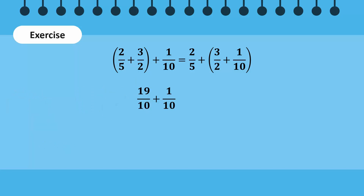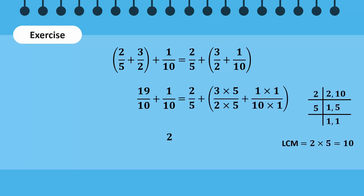19 over 10 plus 1 over 10 is equal to 20 over 10, which can be simplified to 2. Now we will solve the right-hand side by first adding the last two rational numbers. Since the denominators are not equal, an LCM of 2 and 10 is taken.